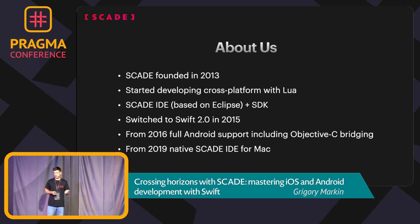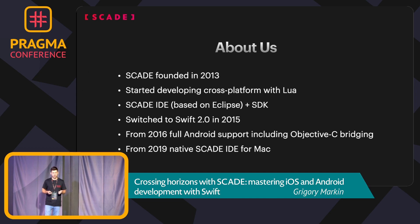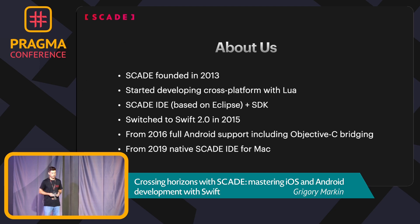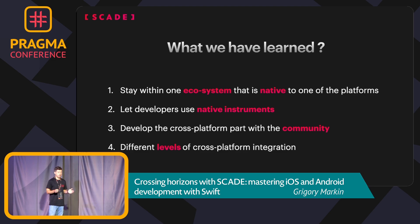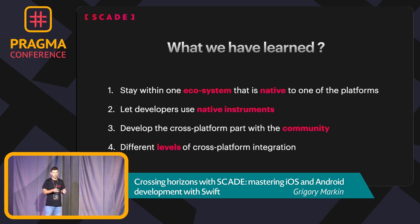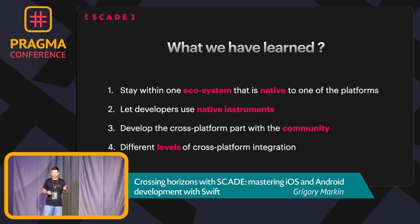Starting from 2019, we also switched to native: we created our own IDE as a native application for Mac because we wanted to be as native as possible for one platform. What we learned during this period is that if you want to develop for both platforms, you should stay in at least one — one platform should be your native platform — because we have native instruments and every developer wants to use native instruments: debugger, compiler, all the tools from Apple or Google.